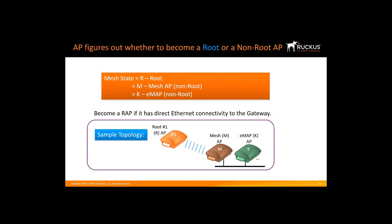An AP needs to figure out whether to become a root AP or a non-root AP, and if it is a non-root AP, then it is used to determine if it is a MAP or an EMAP. An AP becomes a root AP if it has a direct Ethernet connection to a gateway or to a SmartZone network controller. In this topology, we see that the root AP has a direct Ethernet connection to the gateway. The MAP and EMAP also have an Ethernet connection, but their Ethernet connection does not have a direct connection to the gateway.